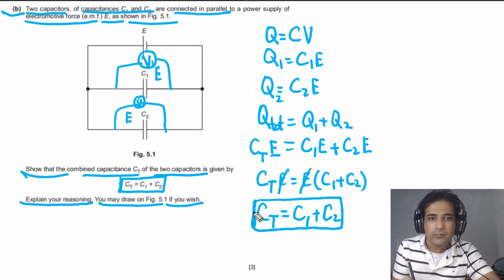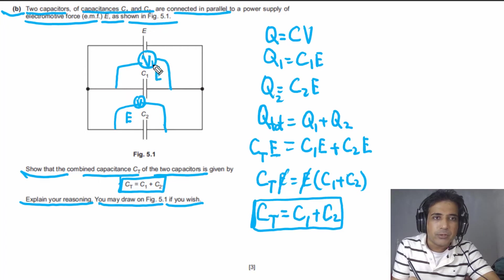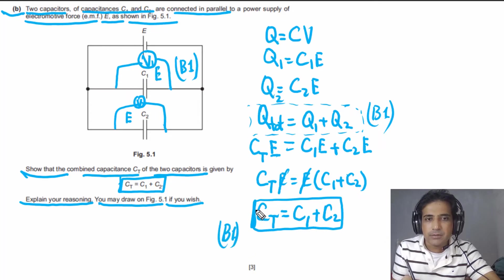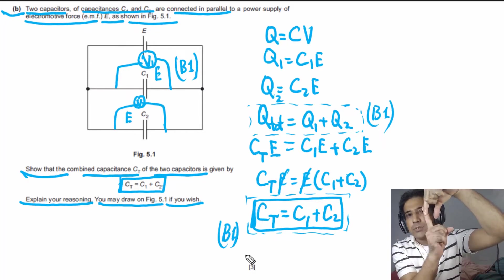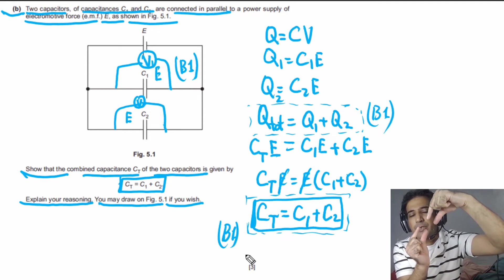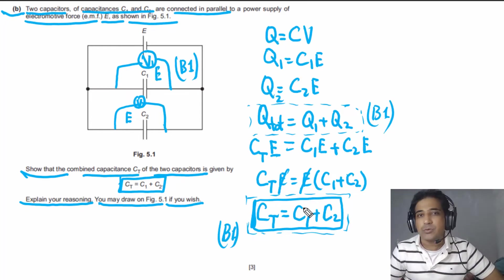This derivation earns three marks: one for stating the potential difference across each capacitor equals E, one for the Q_total step, and one for the correct final answer. Intuitively, when capacitors are connected in parallel, you are effectively combining two small plates into one large plate, increasing the total plate area, so capacitance adds directly.